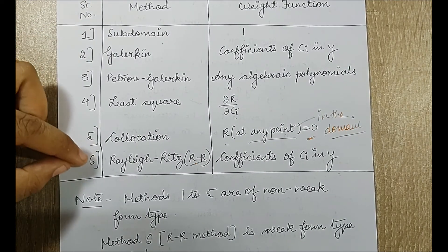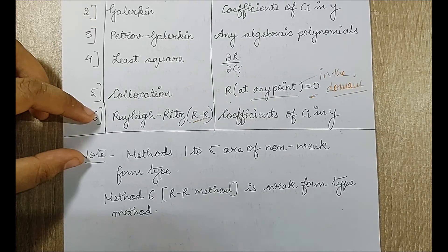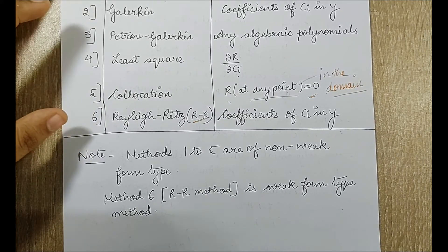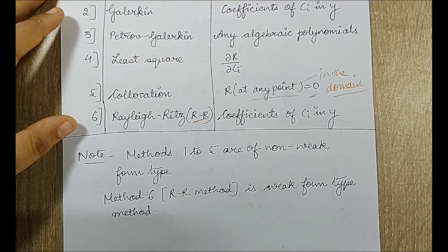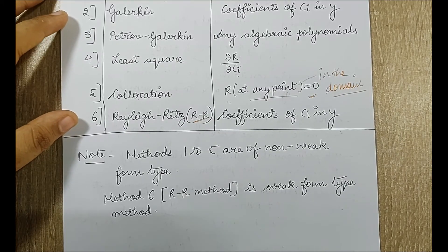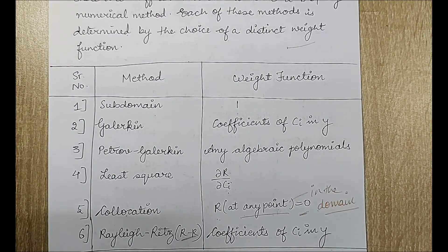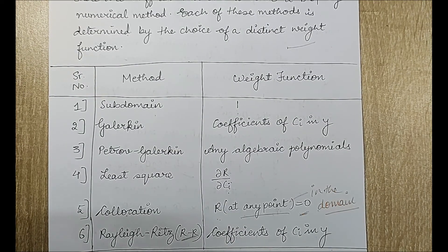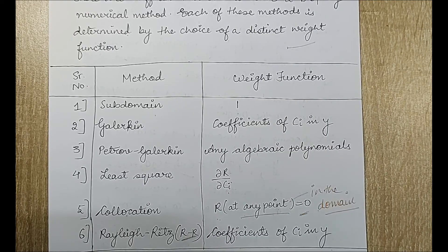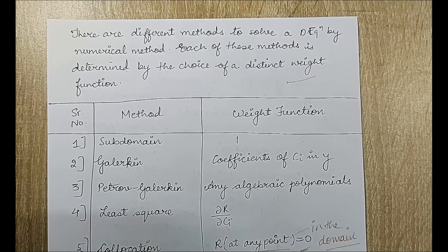The sixth method is called the weak form type method. Why it is called so will be explained when we solve numericals, as you will get a better understanding then. With this I end the session. I hope you have understood the basics of FEM and why this chapter is called the weighted residue approach — because we have a weight function, a residue term, and that is the approach for solving the numerical. See you in the next session with some numericals. Thank you.